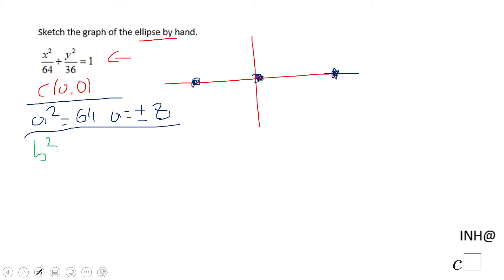b squared equals 36, which is going to give me b equals plus and minus 6. That tells me somewhere here on the y-axis we have these two vertices. Obviously, 0 and 6, 0 and negative 6.